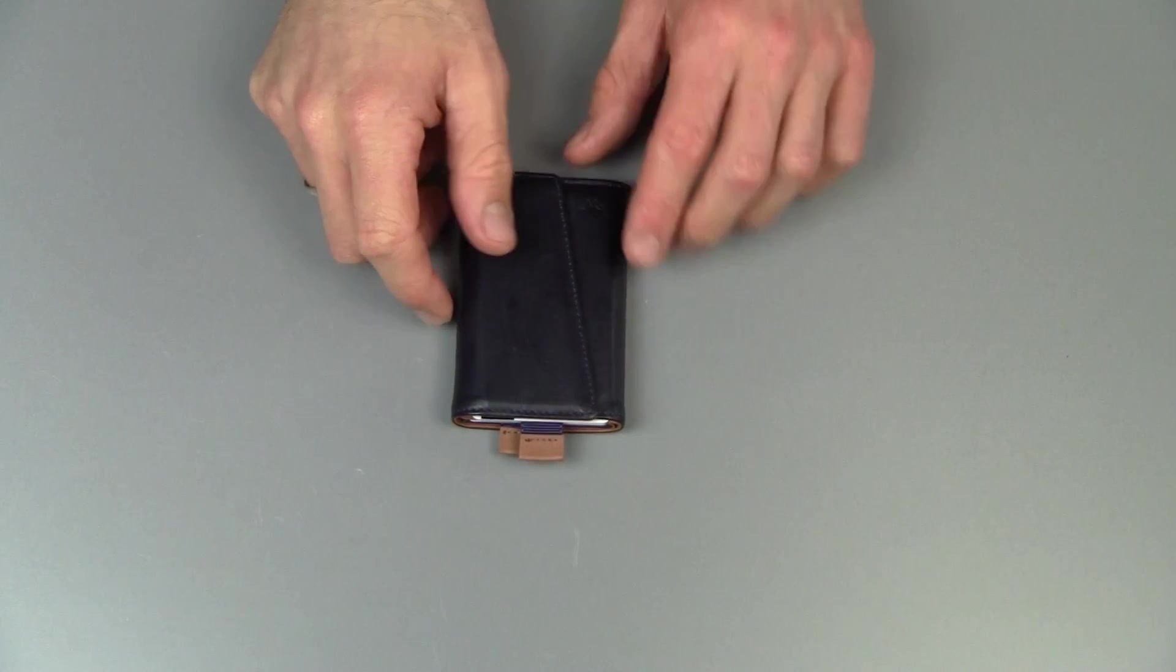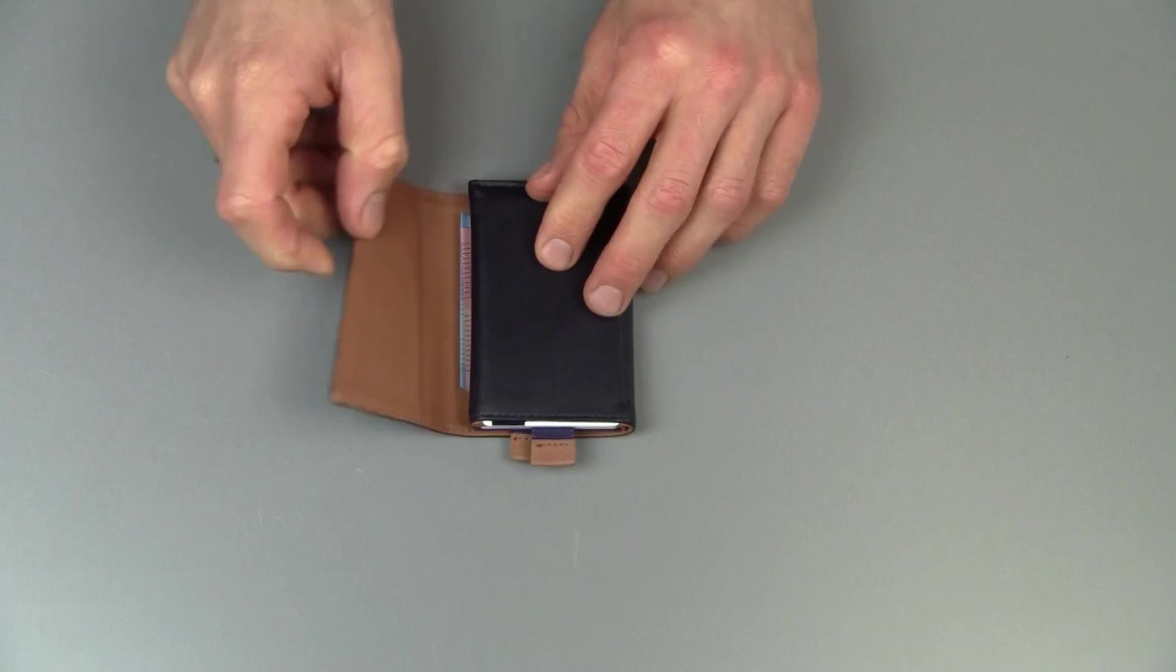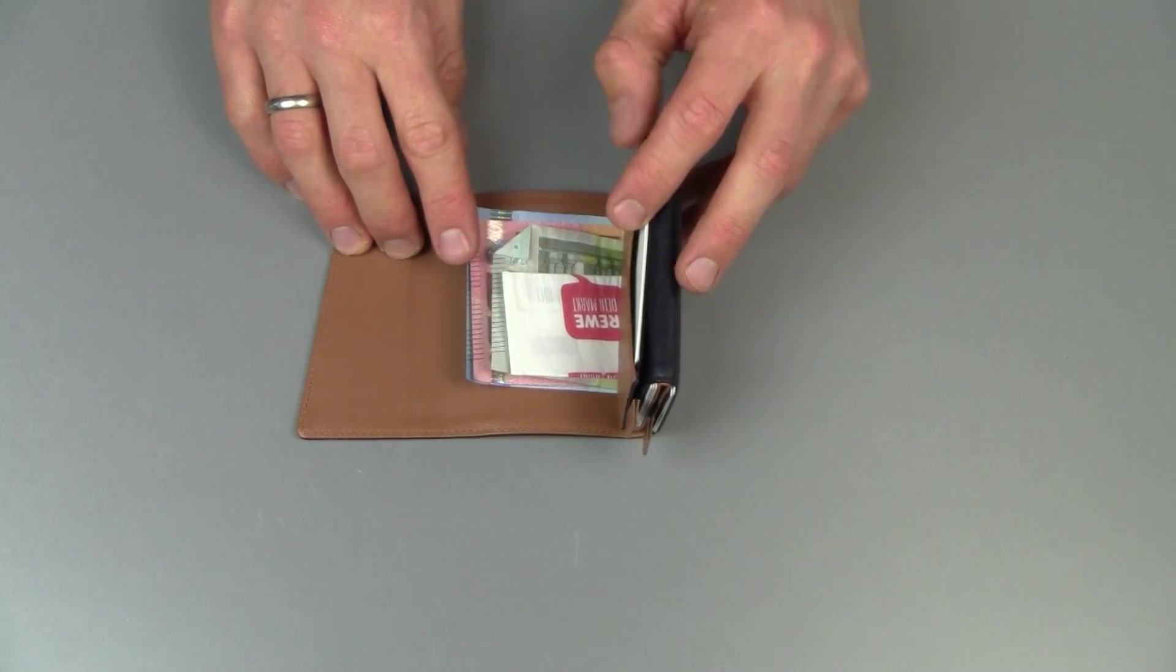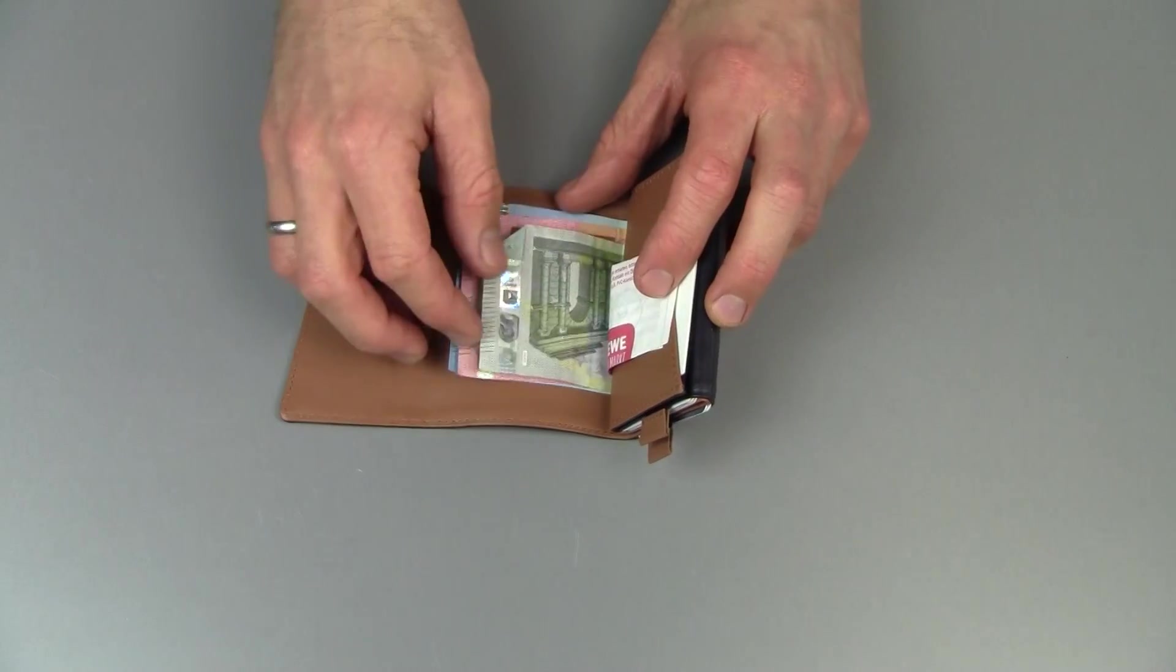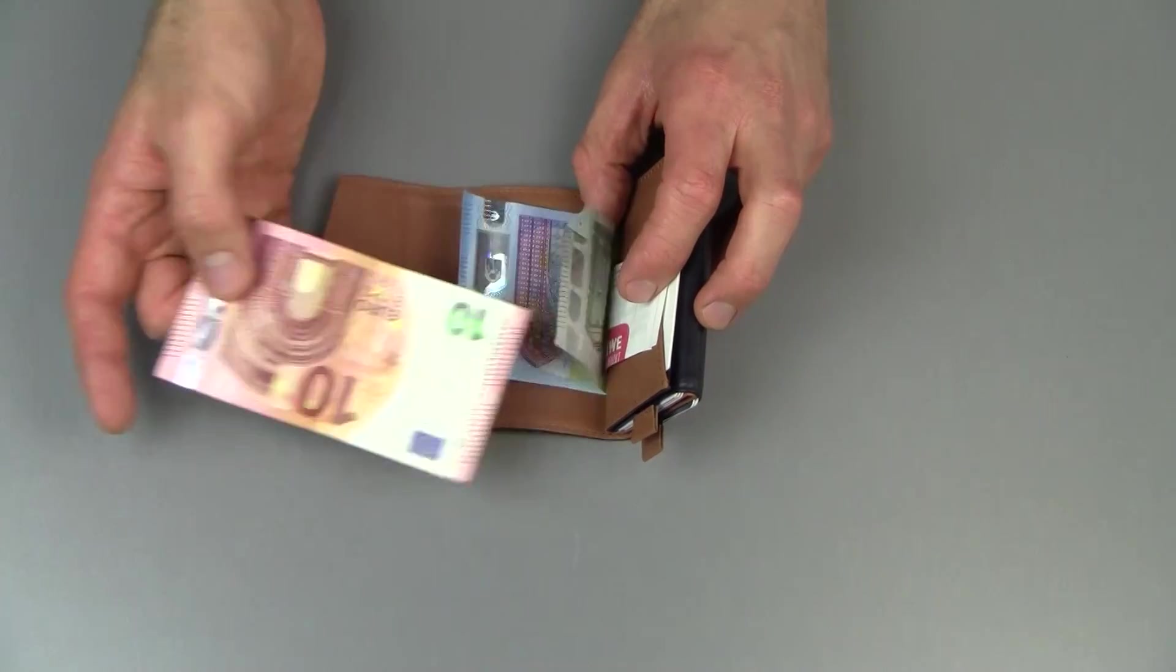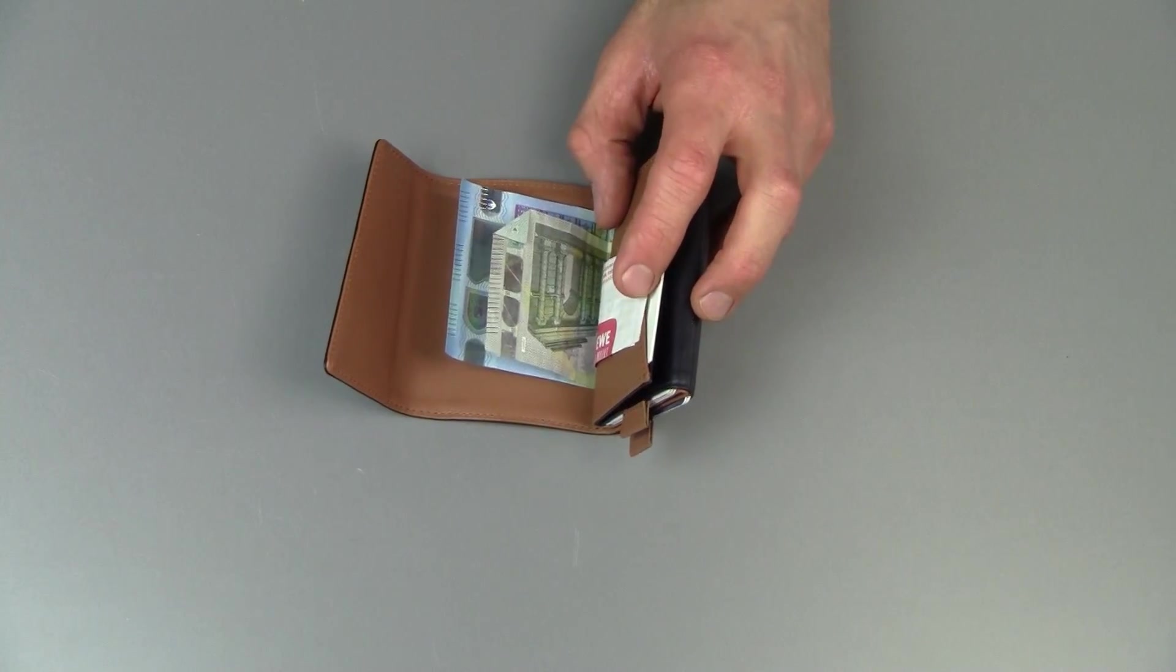On the front here you have their little logo. And this is the first stage I suppose which opens up and reveals your cash. I also got some receipts in here. So you can see it nice and easy to select the bill you want. And you can just pull it out and use it that way. So that's nice.